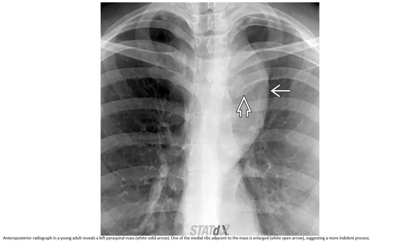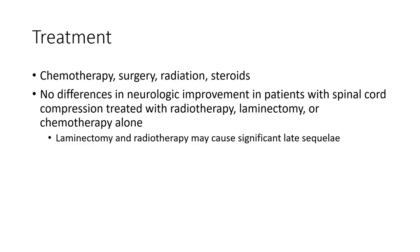Radiographs in a young adult reveal a posterior mediastinal mass. One of the adjacent ribs is enlarged, suggesting a slow-growing process. Treatment includes chemotherapy, surgery, and radiation. No significant difference in neurologic improvement in patients with spinal cord compression treated with radiotherapy, laminectomy, or chemotherapy alone. Laminectomy and radiotherapy may cause significant long-term morbidity. Thank you.